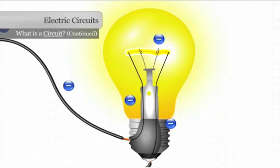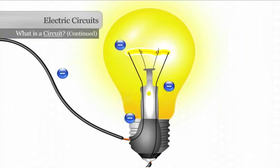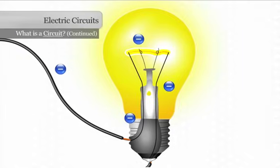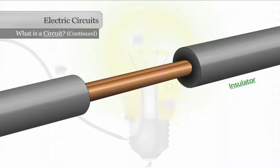Remember that the atoms of conductors easily accept and pass on electrons. The atoms of insulators do not. As we discussed in the first section of the lesson, electrons will not easily pass through insulating material that surrounds a wire.